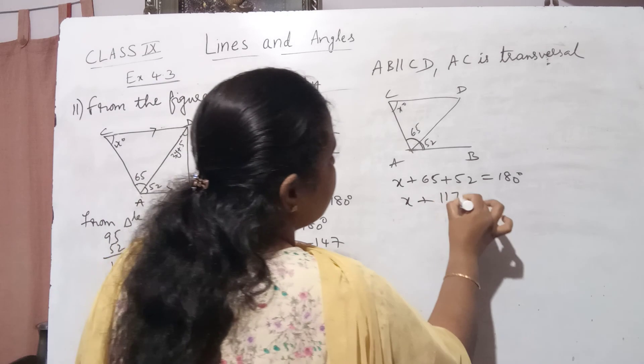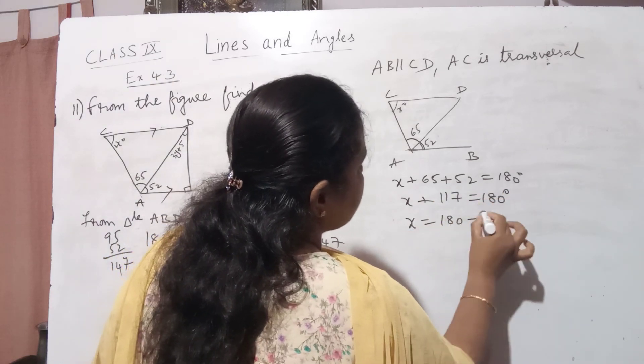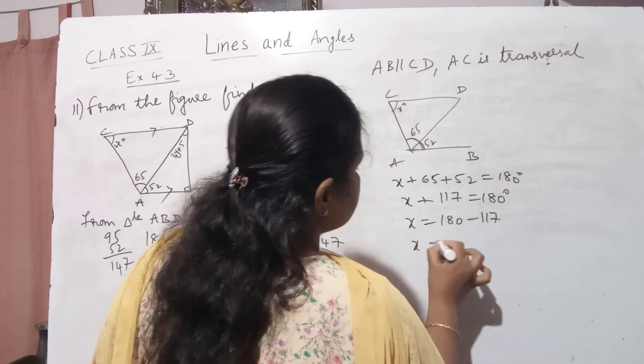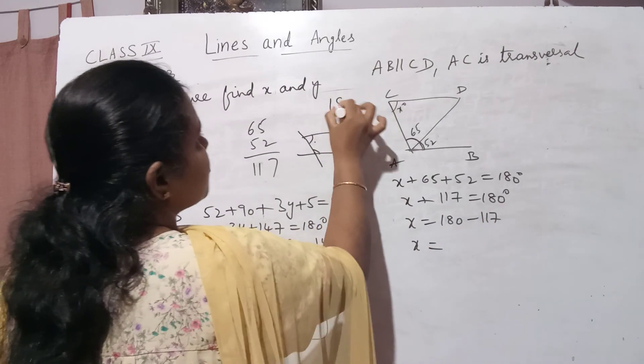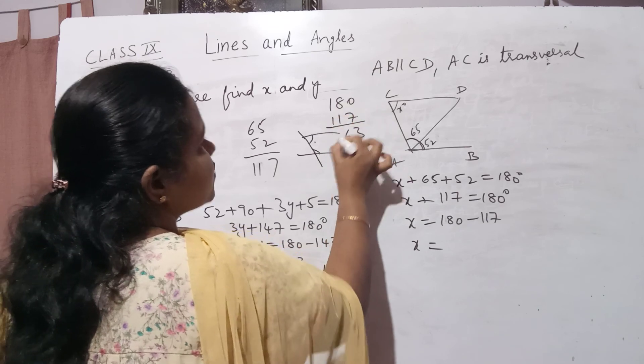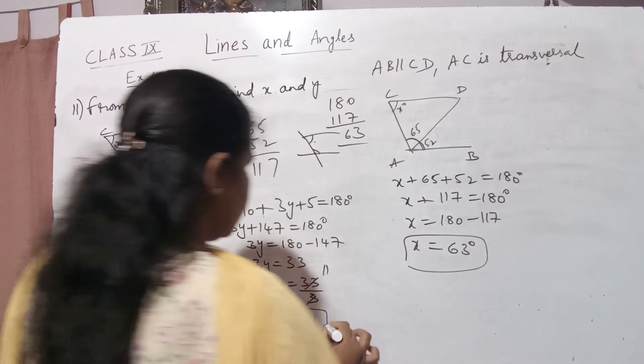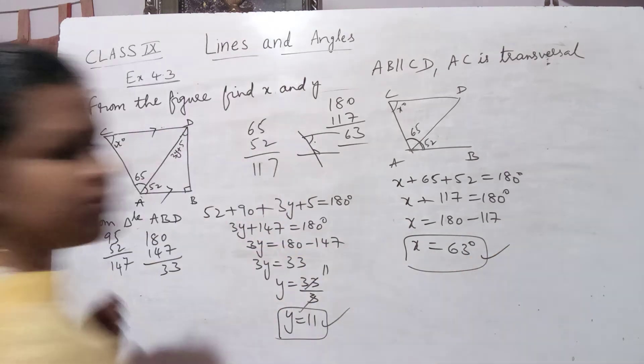117 is equal to 180, so x is equal to 180 minus 117, which is: 10 minus 7 is 3, 7 minus 1 is 6, 63 degrees. So we got x as 63 degrees and y as 11. In this way we have to do the problems.